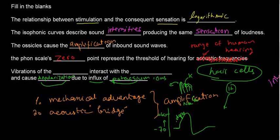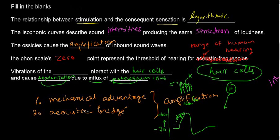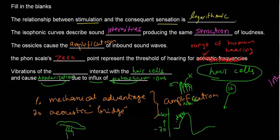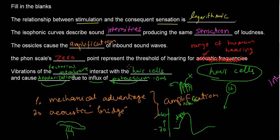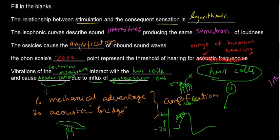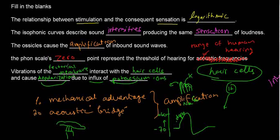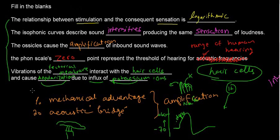Vibrations of the hair cells interact with — well, in the cochlea the hair cells have contact with a membrane called the tectorial membrane. So: vibrations of the tectorial membrane interact with the hair cells and cause depolarization due to influx of potassium ions. I try not to use the word bank because it can confuse you, but if an exercise has one it'll be even easier.